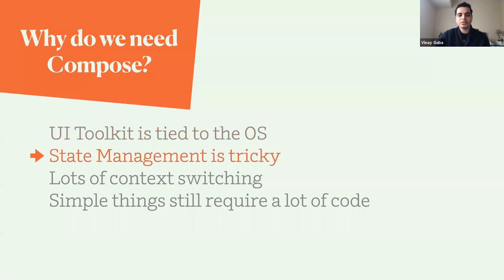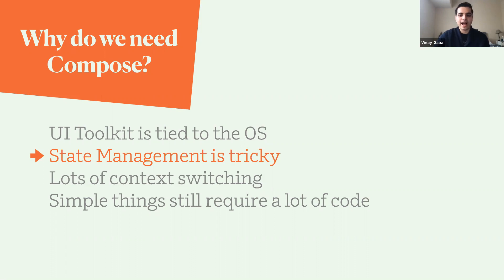The second reason why we need Compose is that the current way we manage UI state has always been a complicated dance. Views store their own state, and we need to make sure that the state in our ViewModels and presenters are in sync. For example, if my business logic requires me to hide a View, that logic is stored in some ViewModel or presenter, and then I need to explicitly hide that View by changing the set visibility method, which in turn changes the internal state of the View. This is bound to be error-prone, and majority of the bugs in our apps usually stem from state management.